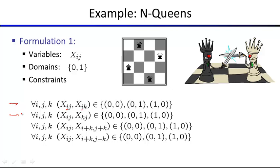The same constraints apply for columns and diagonals. But we're not done — nothing yet says we must place four queens. We need one more constraint: the sum over all variables must equal n, the number of queens required to place.